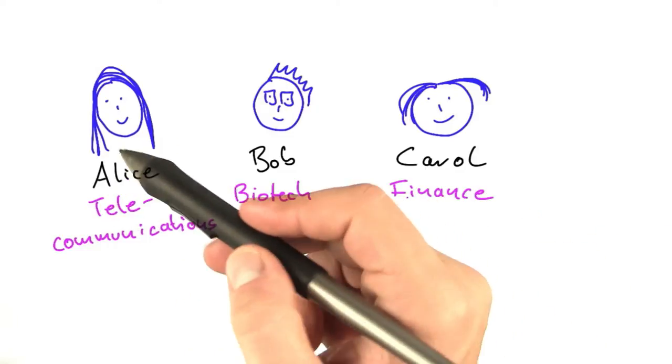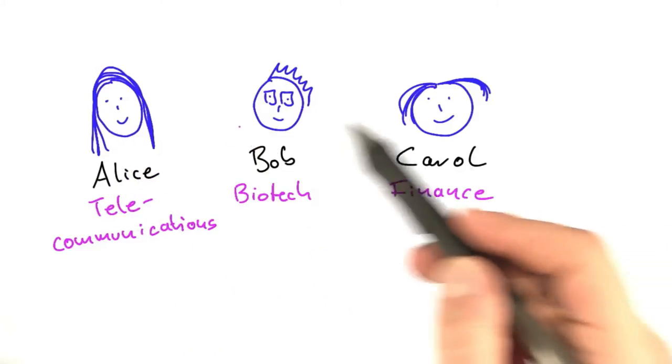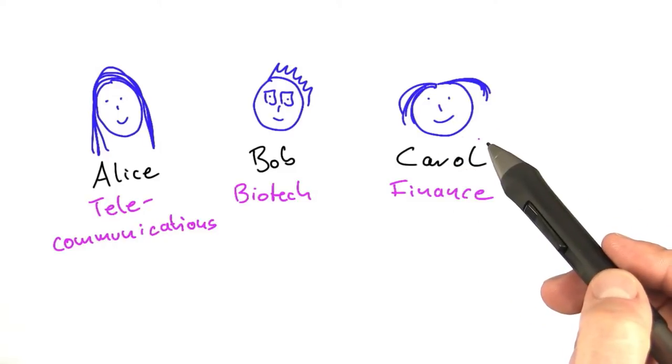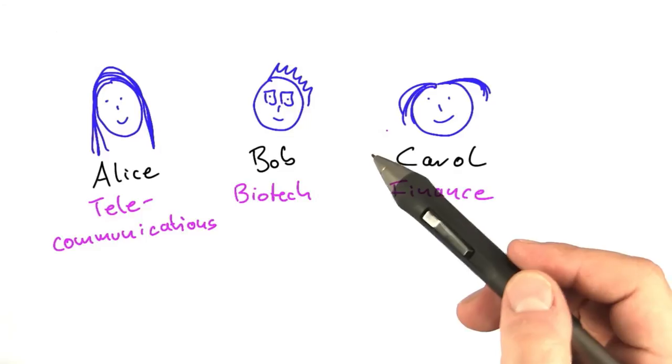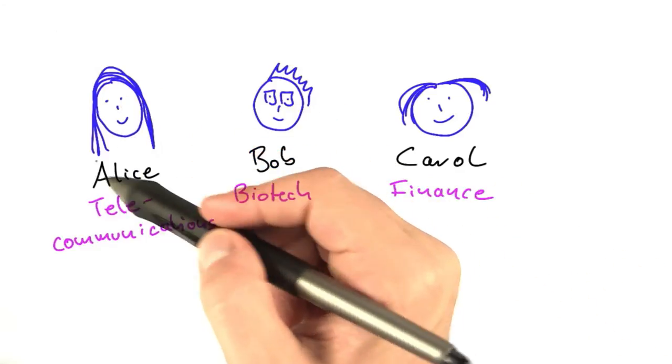Throughout this unit, you'll learn more about the problems that Alice, Bob, and Carol are working on. And you'll also meet some additional computer scientists throughout this course. But let's focus on Alice first.